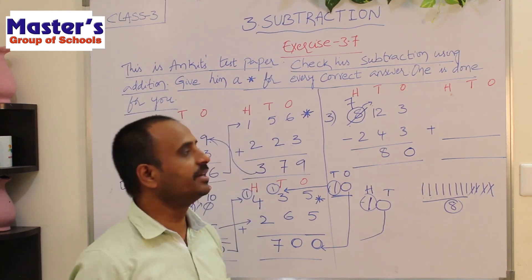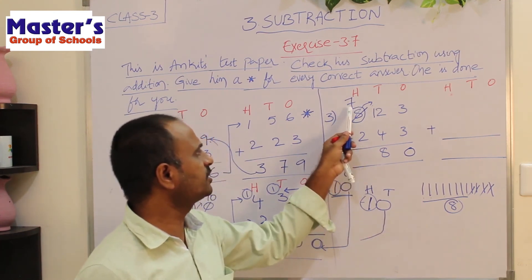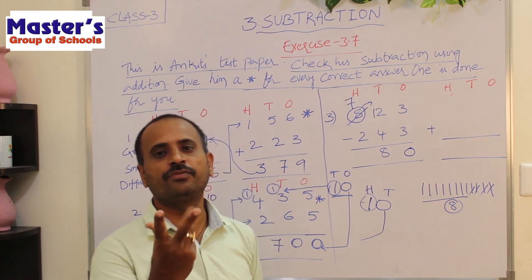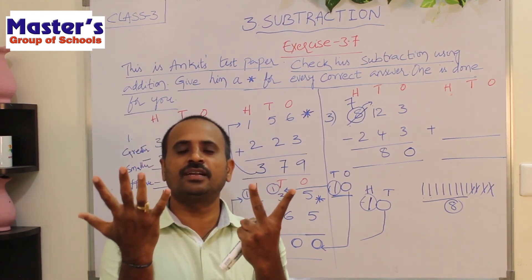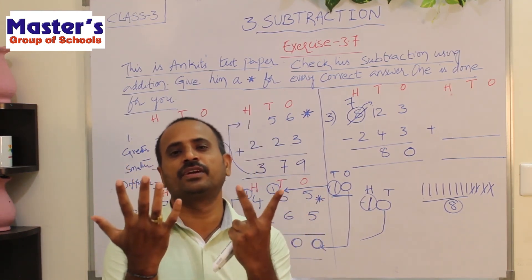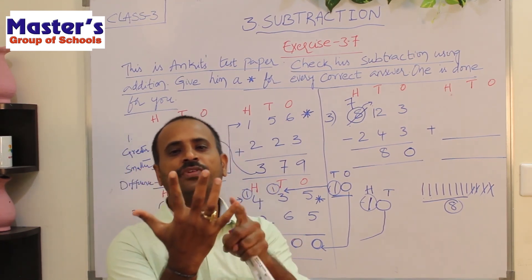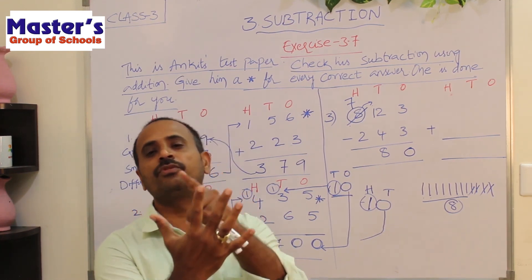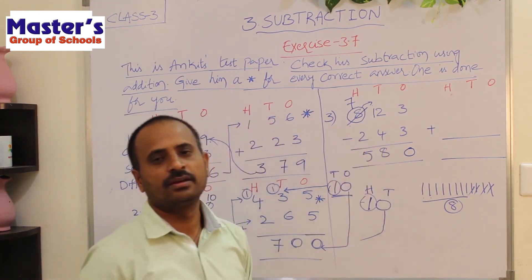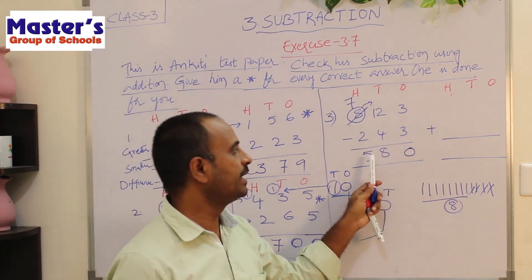Go to hundreds place: 7 and 2 are present. Open 7 fingers, close 2 fingers: 1, 2. There are 5 fingers remaining. Write 5 under hundreds place. Now we can verify this answer by addition.